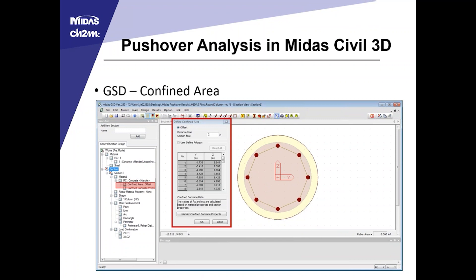One thing to note: while I had a 24 by 24 inch square column, the General Section Designer is easiest to set up by defining the confined core and reinforcement steel layout using a simple offset from the section face. What I did was enter the 24-inch circular column, use the offset to define the confined core, then once that table was written, go back and change the outside section to the 24 by 24 inch square — and the confined core maintained its shape.